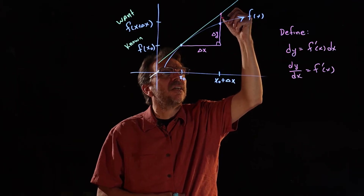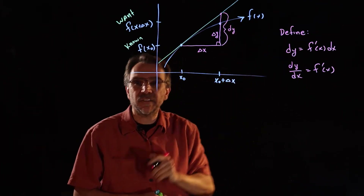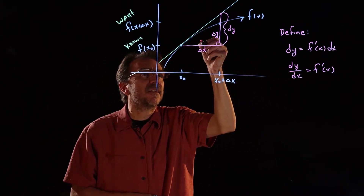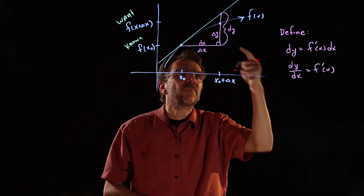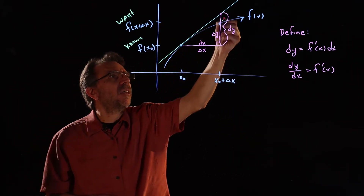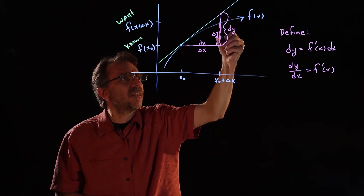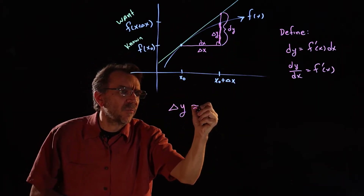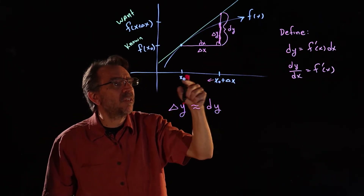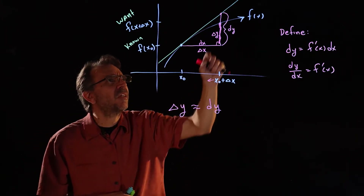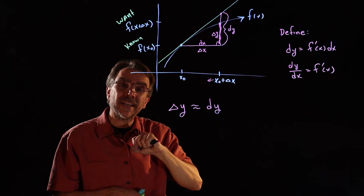With this definition, dy the differential is a little bit longer than delta y. So delta y is approximately equal to dy, and that approximation gets better and better as the point moves closer to x naught — as delta x gets smaller. The small difference between them is the error.